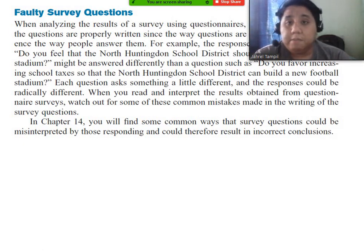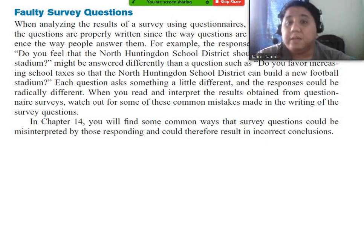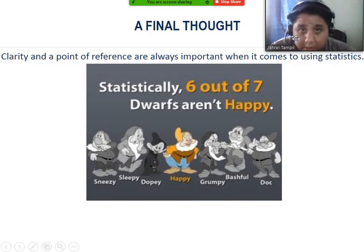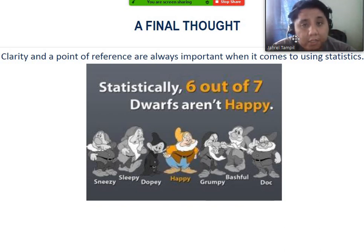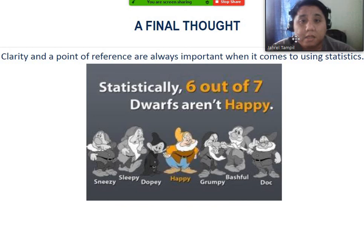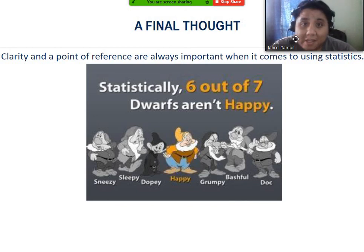Although the PowerPoint mentions a chapter 14 for this, faulty survey questionnaires is actually beyond the scope of business statistics. These are only some misuses, but there are actually a lot more out there — and there might even be some we haven't thought of yet. Remember, clarity and a point of reference are always important when using statistics. Take a look at the picture: statistically, 6 out of 7 dwarfs aren't happy — which is actually true, because there's only one dwarf named Happy.